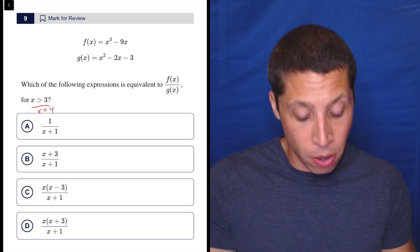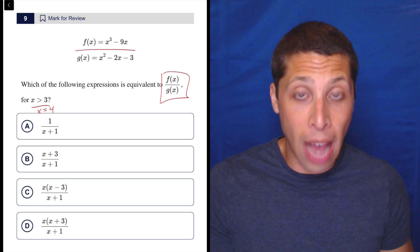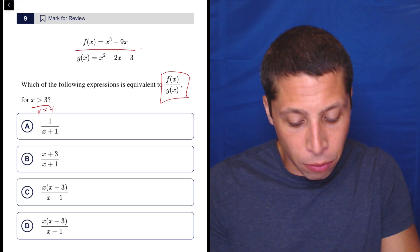So we have to make x greater than three. Let's make it four, right? And then they're telling us we need something equivalent to f of x over g of x. So we're going to put these two things on top of each other. Let's just see what we get if we put four in.